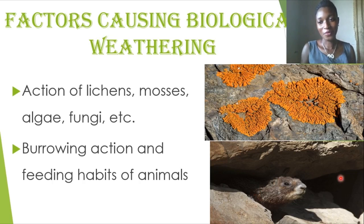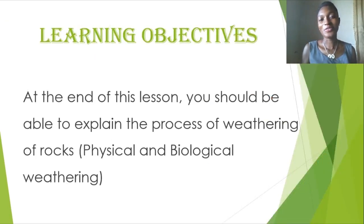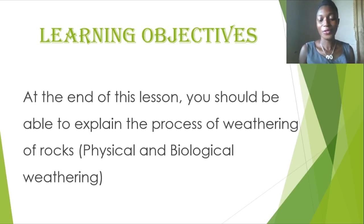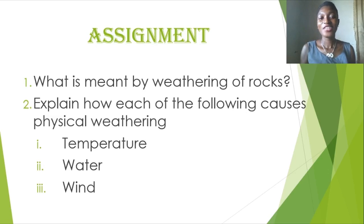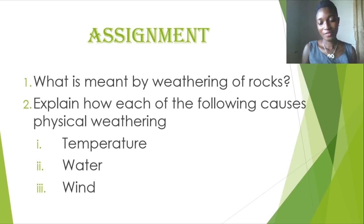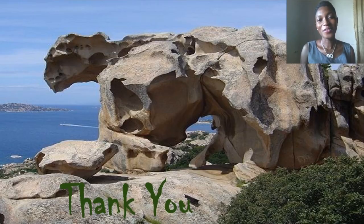This brings us to the end of our lesson for today. We looked at the processes of weathering of rocks — specifically physical and biological weathering. There is another type we will look at in our next class. For your assignment, explain what is meant by weathering of rocks, and explain how each of the following causes physical weathering: temperature, water, and wind. Thank you so much for your attention and have a great week.